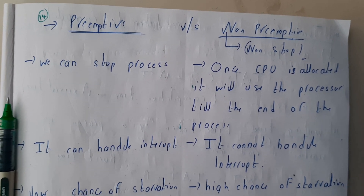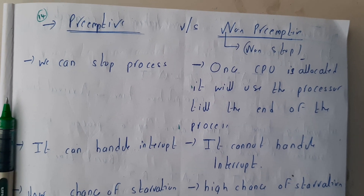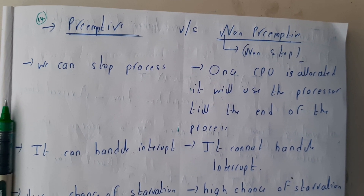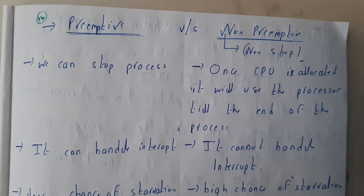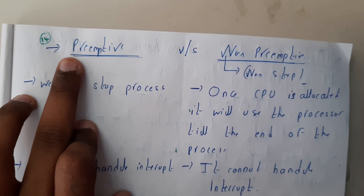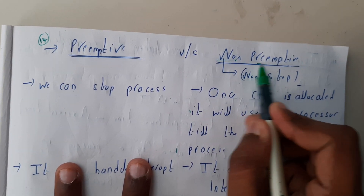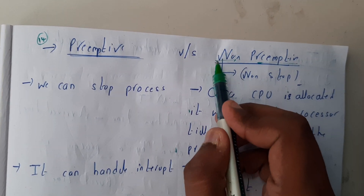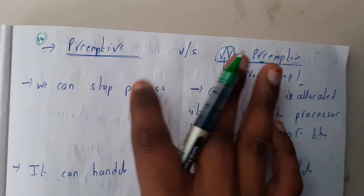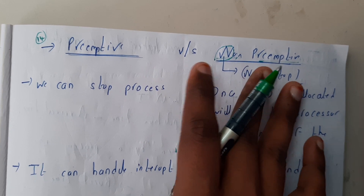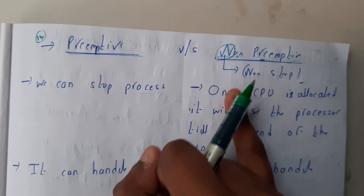Hello guys, we are back with our next tutorial. In this tutorial let us go through the concept of preemptive and non-preemptive. You need to remember a small trick, or else you'll be confused in the exam. The first letter of non-preemptive is 'N', which stands for non-stop — a process which stops for another process versus a process which does not stop.